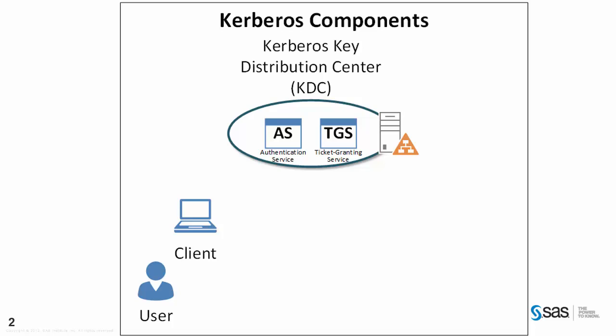Next we have the client, where our end user is located. This could be an actual client PC or another server where the client process is running. Finally we have the server, where the server process the end user on the client wants to connect to. So here we have the three heads of the Kerberos protocol: the KDC, the client, and the server.